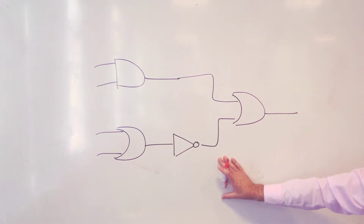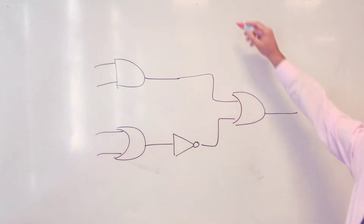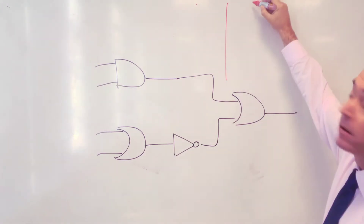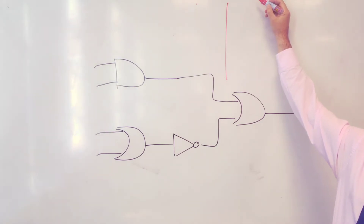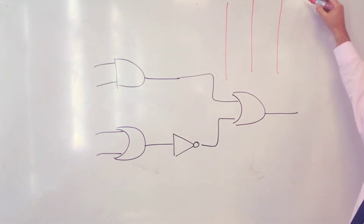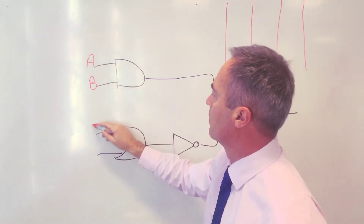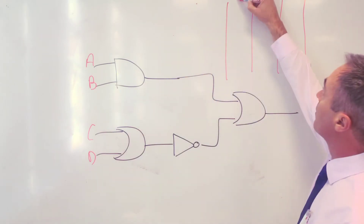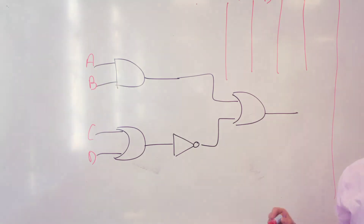We've got a circuit with gates and we want to draw its truth table. How many inputs have we got? Four inputs. So how many columns will I need? I need a column for each one of my inputs A, B, C, D, and then a fifth column for the outputs.